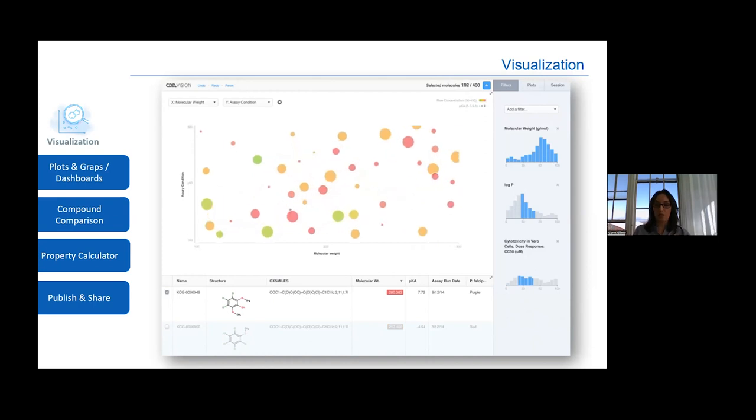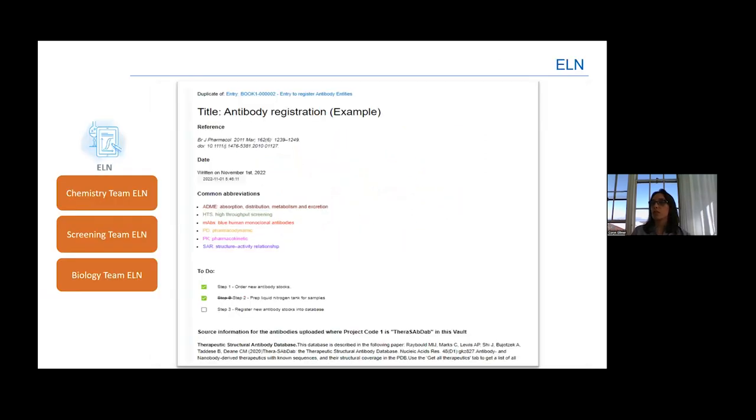The last module is electronic lab notebook. The CDD Vault ELN is made both for chemistry and biology teams. It is for storing your structured and unstructured data. What is great about ELN is that it can be used for drawing structures or reactions and then linking it back to the entity registration system.